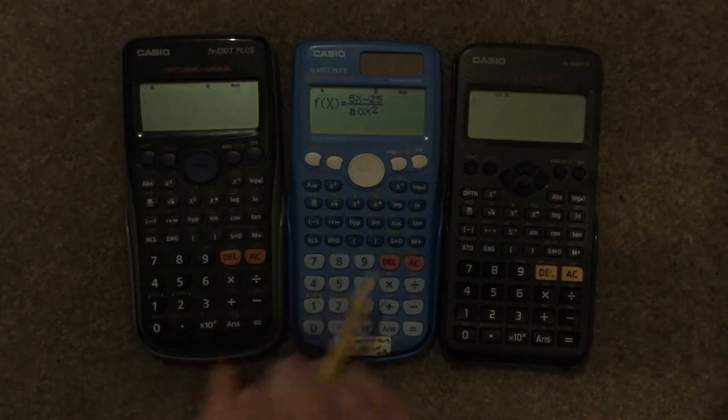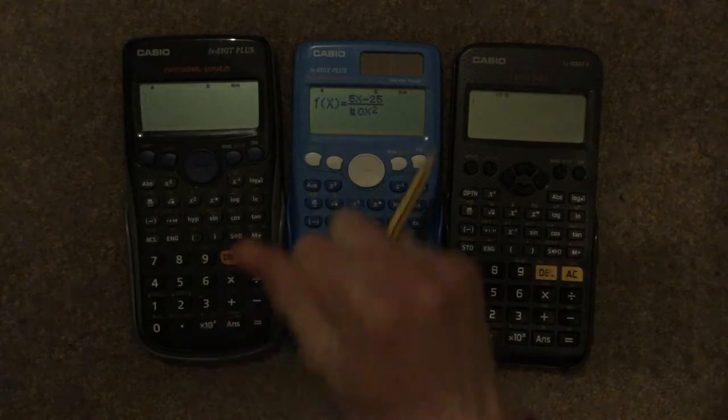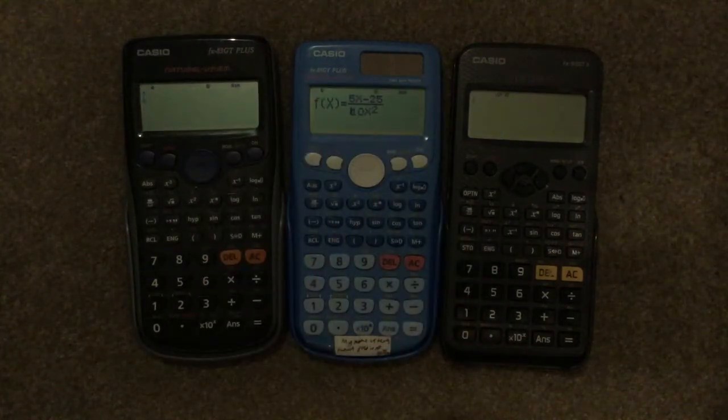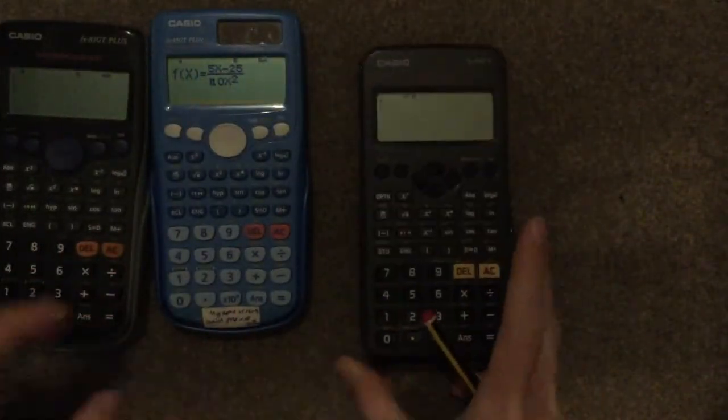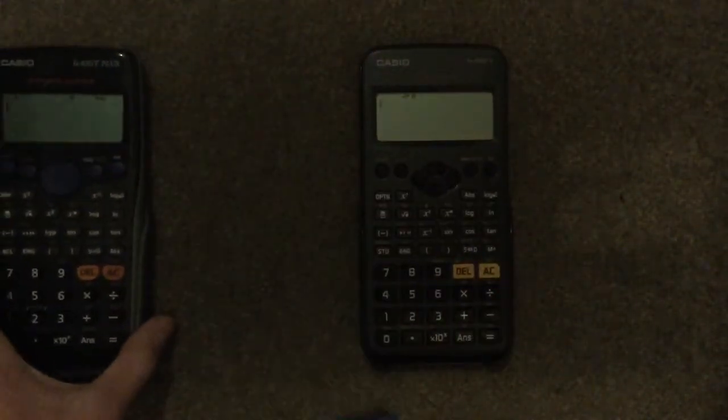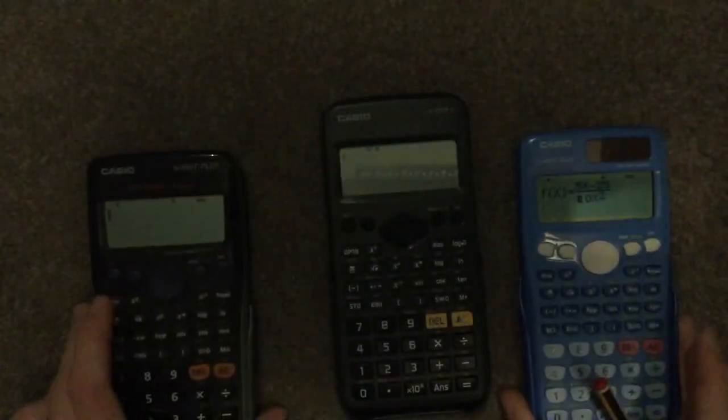I have the FX-83 GT+, the FX-85 GT+, and the FX-83 GTX. These two calculators are basically identical in function, the only difference is this one has a solar panel. This one is newer, more up to date, more advanced, and easier to use. I'm going to be focusing on this calculator, but I'll also show you the method on these two.